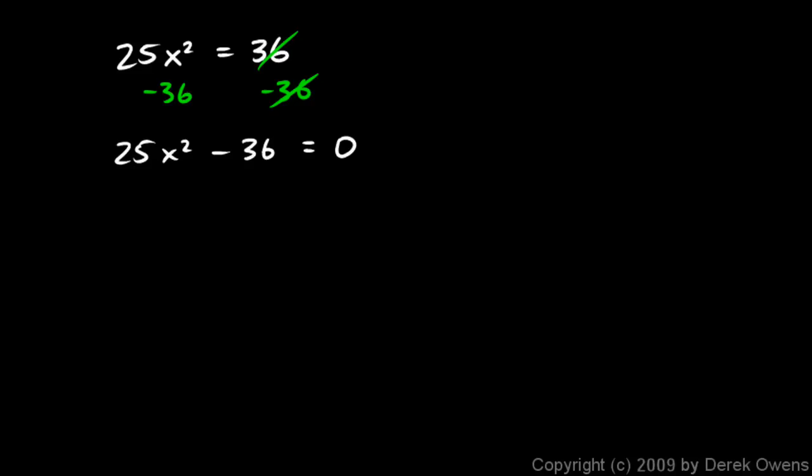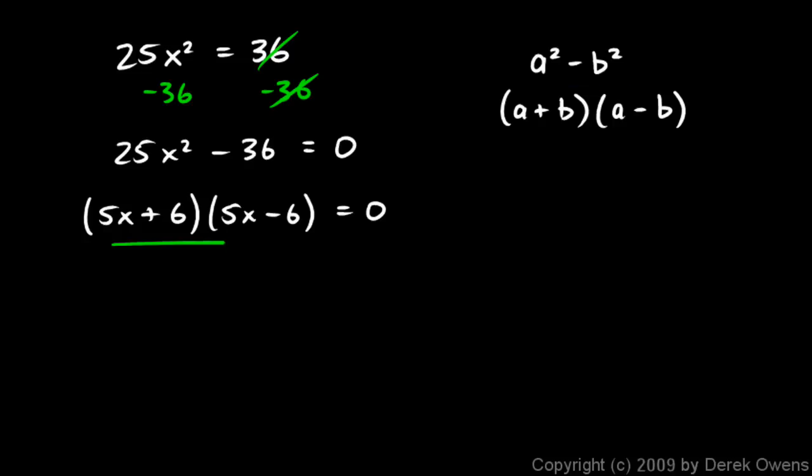And remember our factoring the difference of two squares. In general, a² - b² can always be written as (a + b)(a - b). We're going to apply that concept to this expression. So this can be factored as (5x + 6)(5x - 6) = 0. So 25x² - 36: the 25x² was (5x)², and the 36 was 6². So because it's the difference of two squares, it can factor like that. If you don't quite get that, then do a FOIL on these and you'll get this.